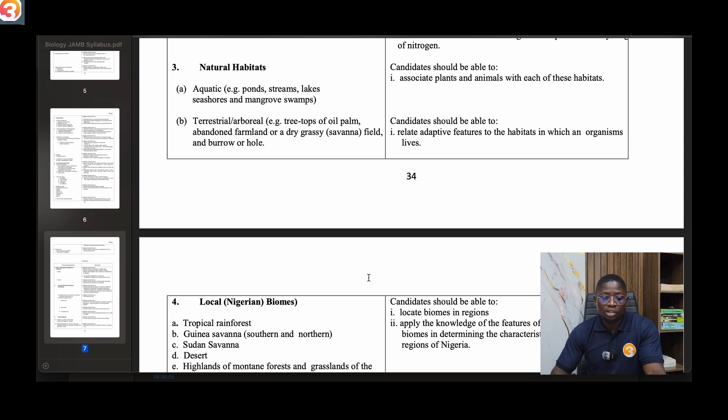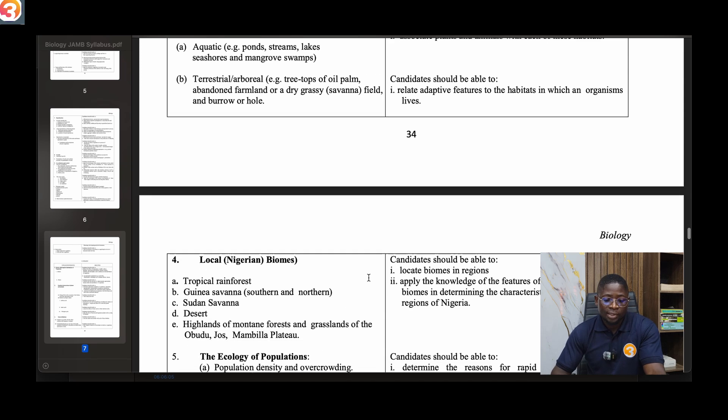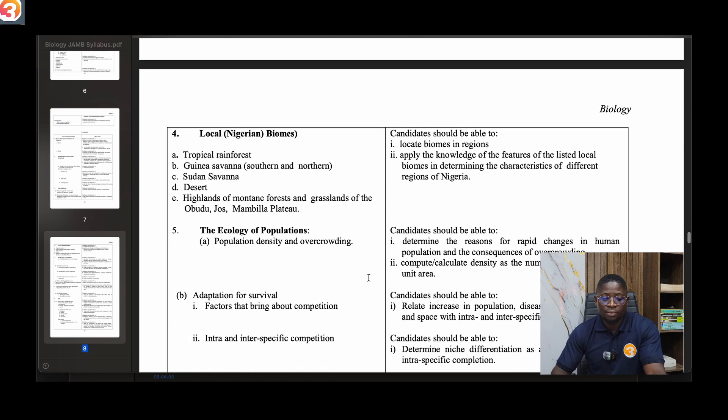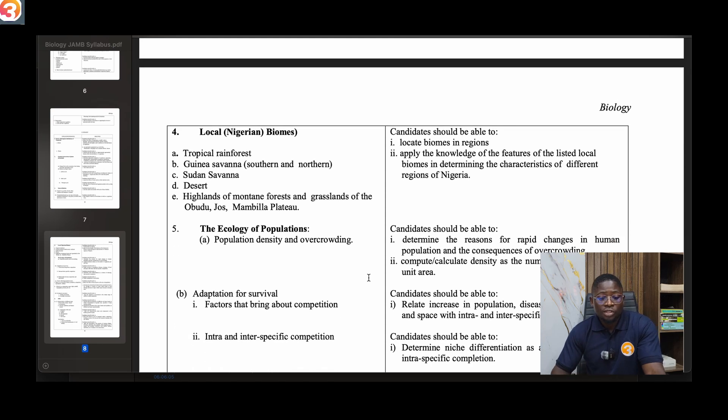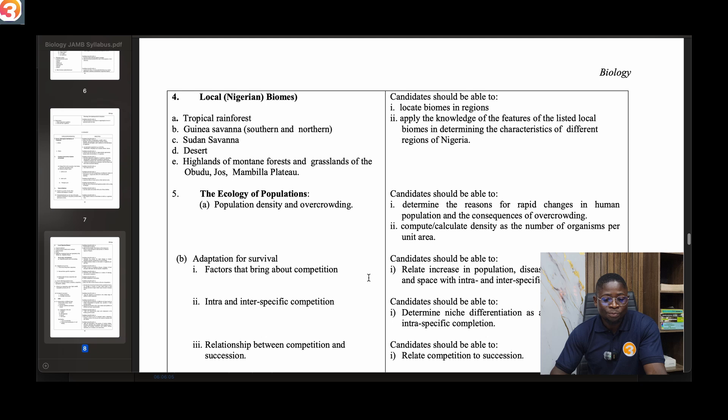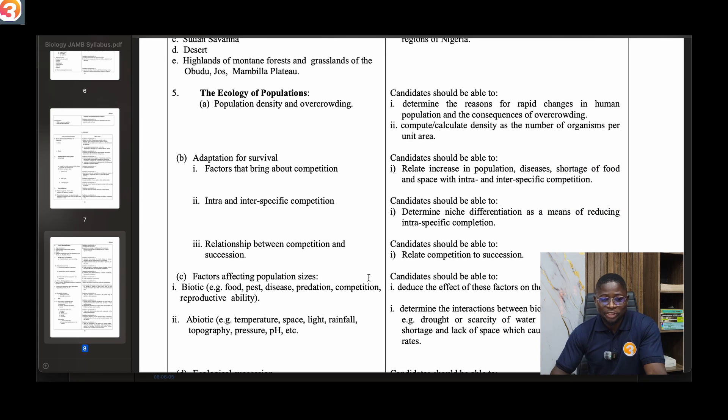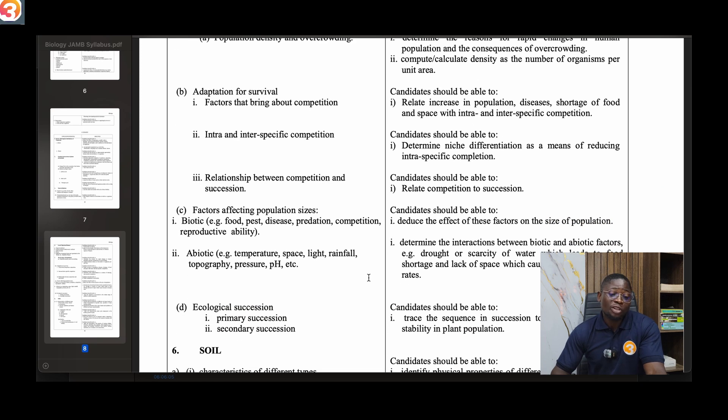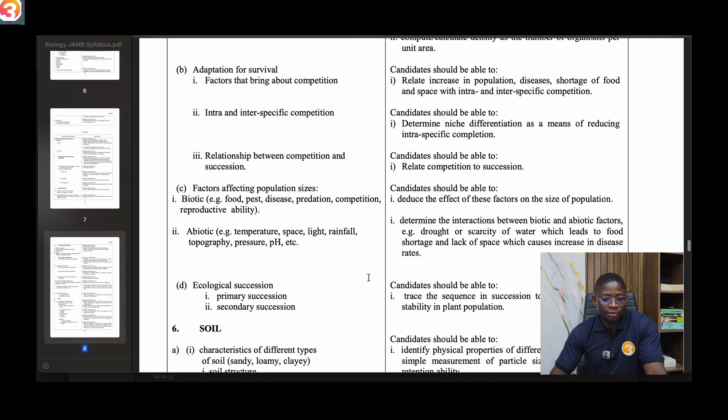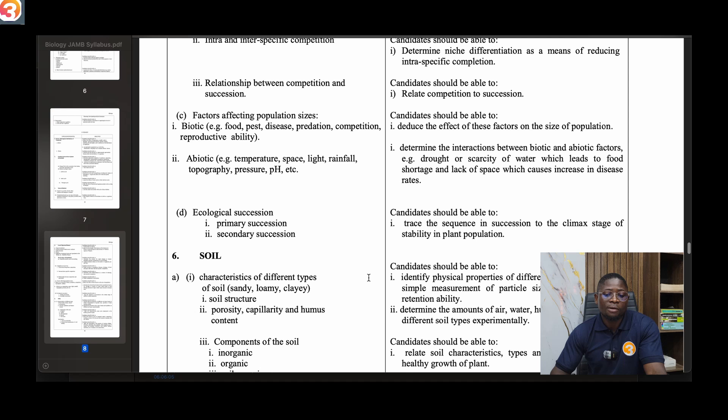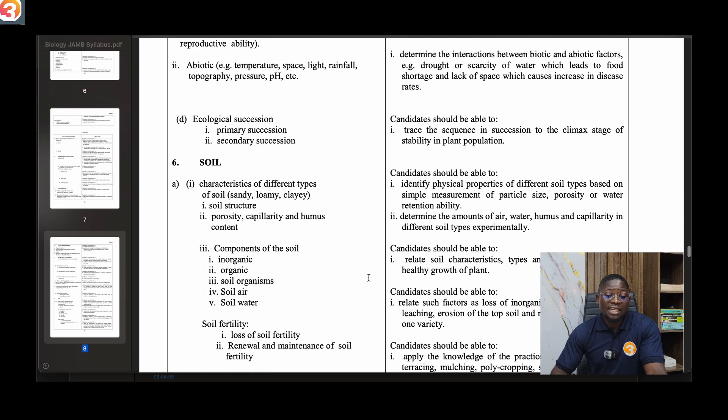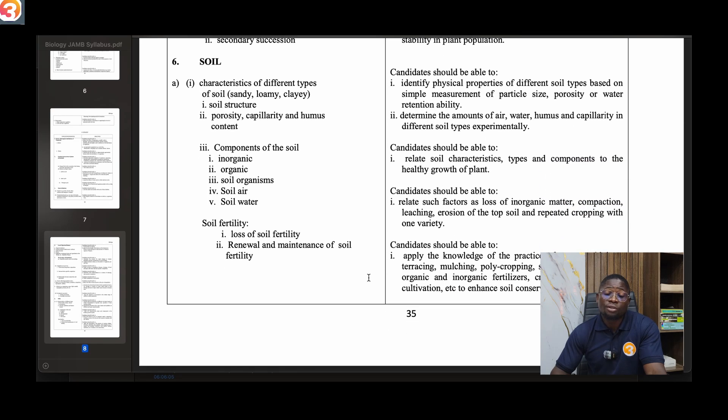Number four, talk about local Nigerian biomes - the tropical rainforest, Guinea savannah, Sudan savannah, desert, highlands of mountain forest and grasslands of Obudu, Jos, Mambila plateau. Then number five, ecology of populations - population density and overcrowding, adaptation for survival, factors that bring about competition, intra and inter-specific competition, relationship between competition and succession. Talk about factors affecting population sizes, biotic and abiotic factors. Then ecological associations.